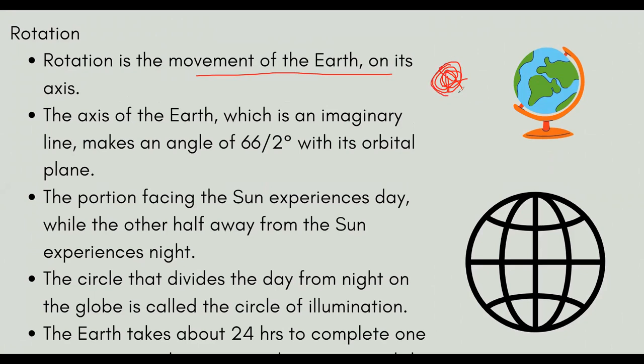When the Earth is rotating on its own axis, it completes one full day. The angle of the Earth's axis is 66.5 degrees. This is how the Earth rotates on its own axis.